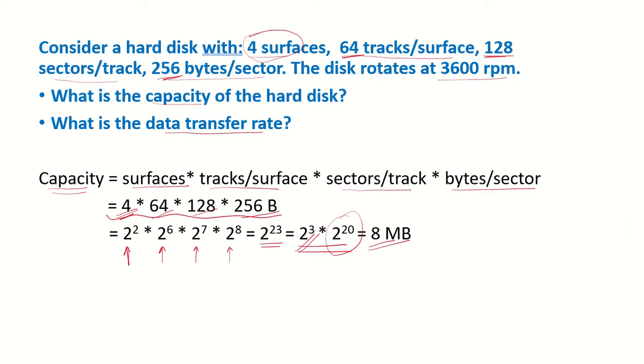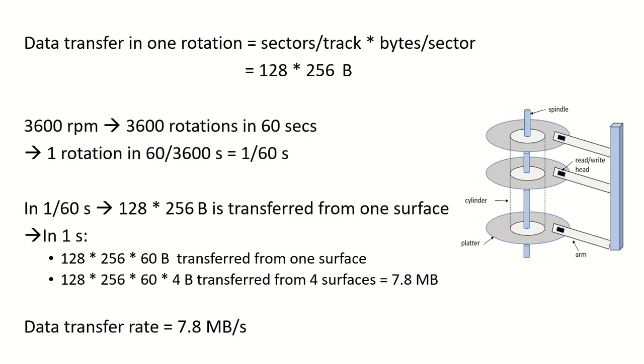The next part of the question was related to the data transfer rate. So let's find out what is going to be our data transfer rate. The data that can be transferred in one rotation means how much data will be transferred from one track because one rotation would be reading from one track from one surface.